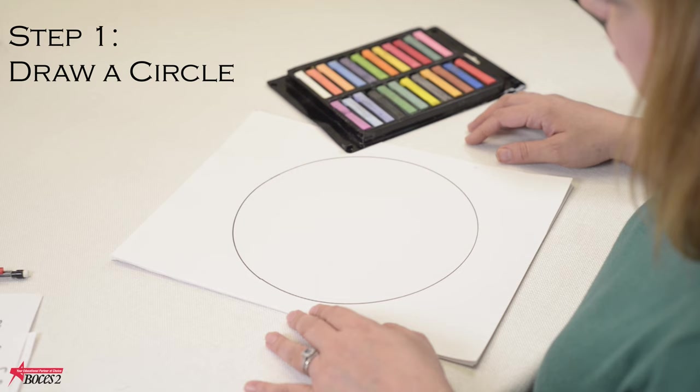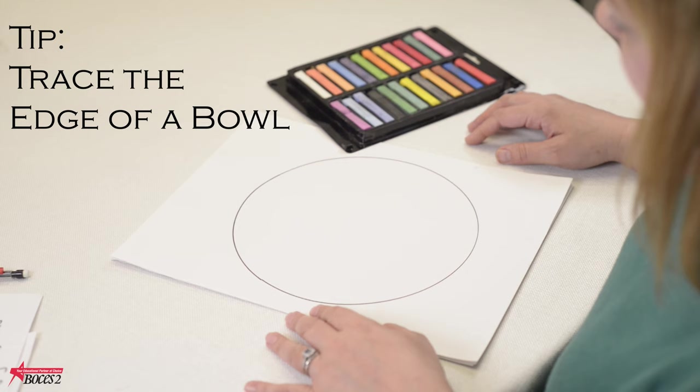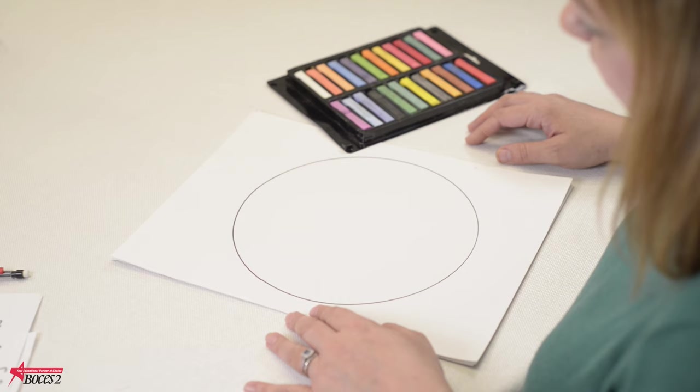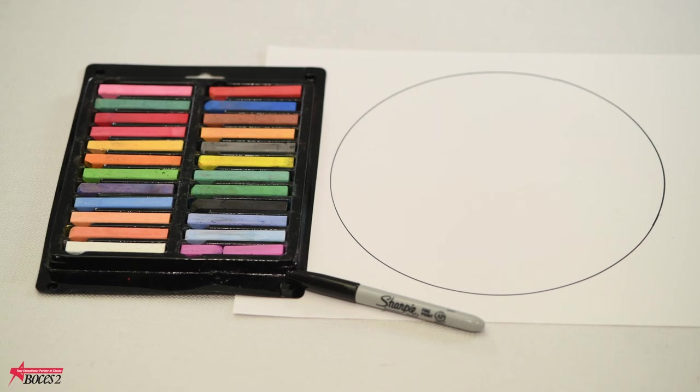You can use any household item that you can find or in your activity packet that I mailed home to you. I did put an example of a mandala in the packet, but we're going to be making our own. So any circular object that you want to trace will work out just fine.